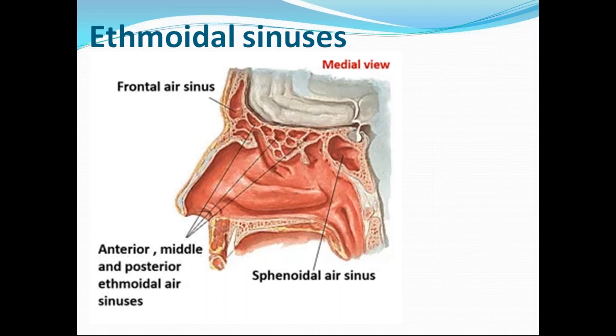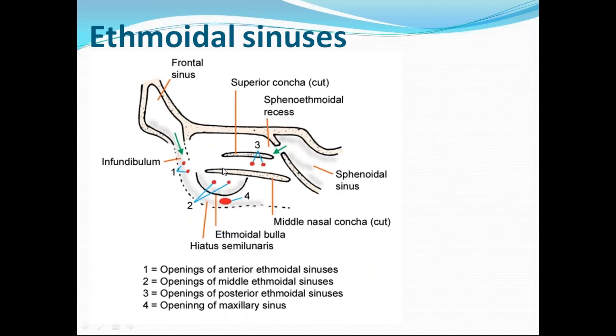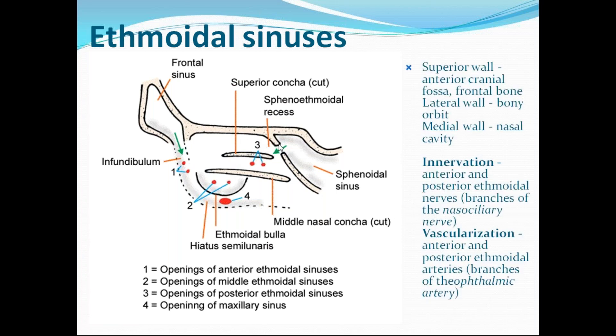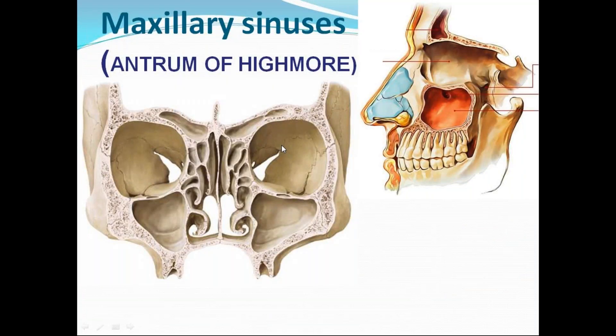So far we have covered the frontal, sphenoidal, and ethmoidal sinuses. The sphenoidal sinus is the one located in the deepest part. Now we move to the last and largest paranasal sinus — the maxillary sinus.